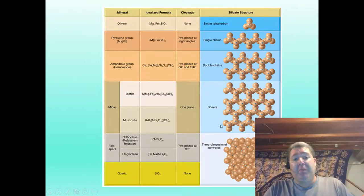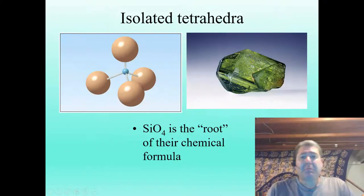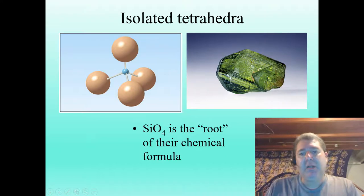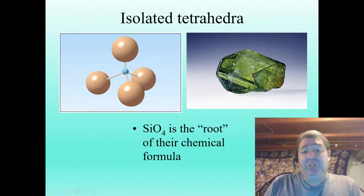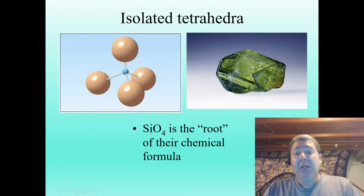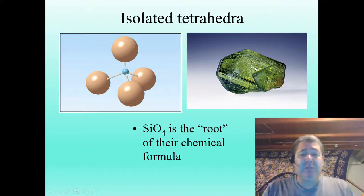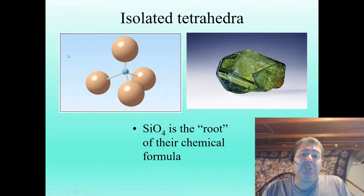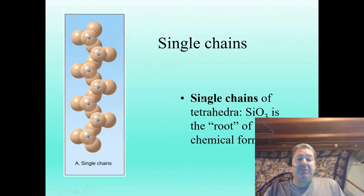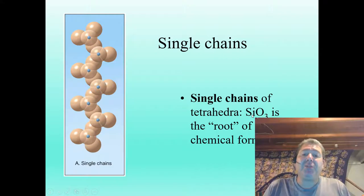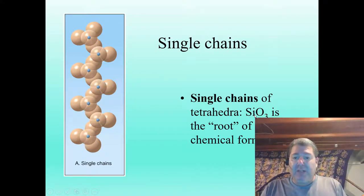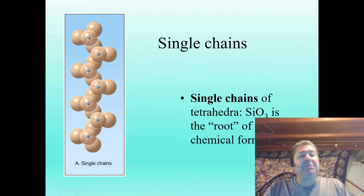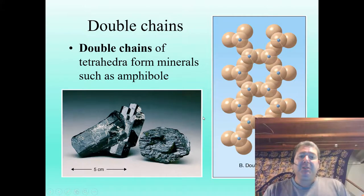Looking at these groups individually: olivine has isolated tetrahedra (SiO4 as root formula), is olive green in color, and if gem-quality is called peridot. Single-chain silicates — pyroxenes — have SiO3 as the root formula, three oxygens per one silica. Double-chain silicates — amphiboles like hornblende — share oxygens between adjacent chains as the magma cools.